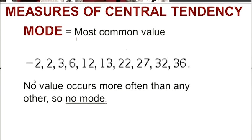The mode is the most common value. So if I had one of these numbers that occurred two or more times, that could be a mode. In this case, no value occurs more often than any others, so in this example, there is no mode.